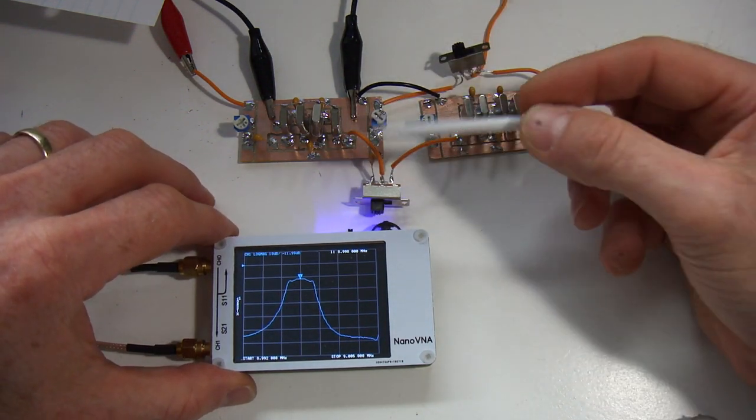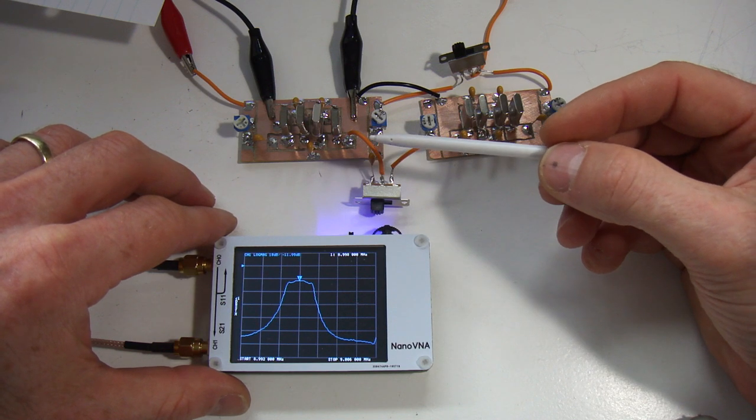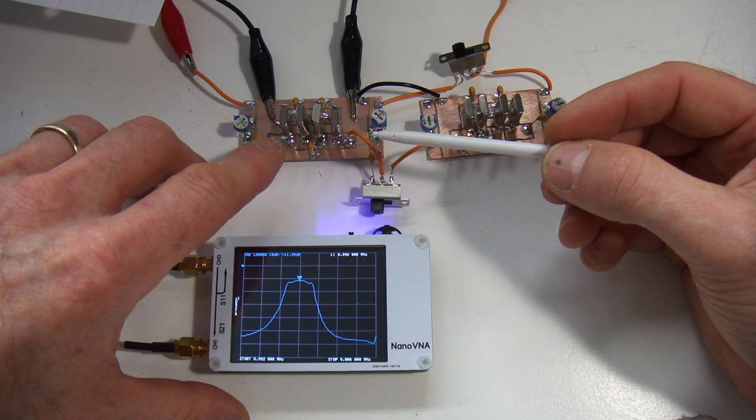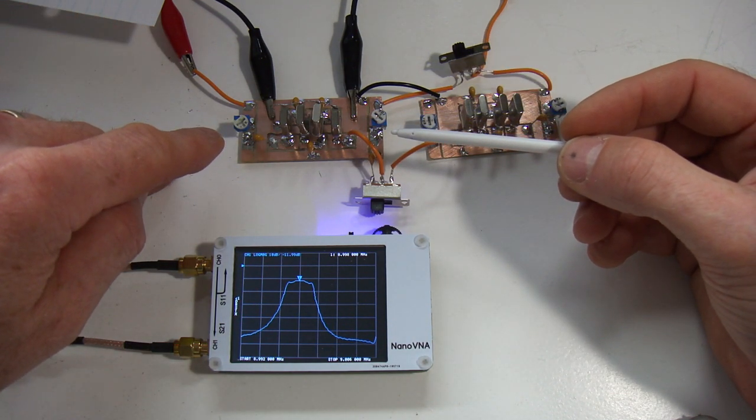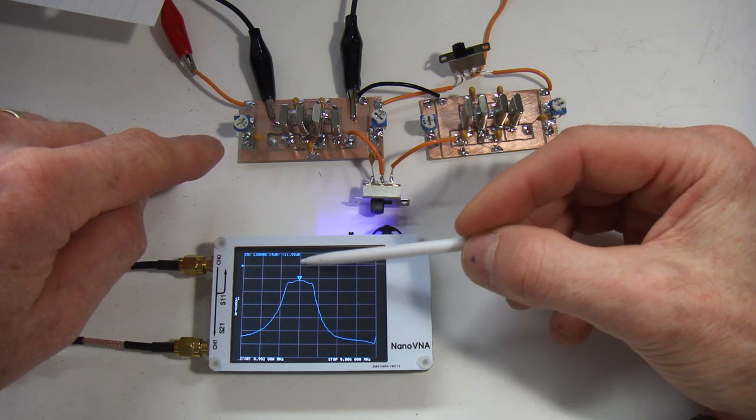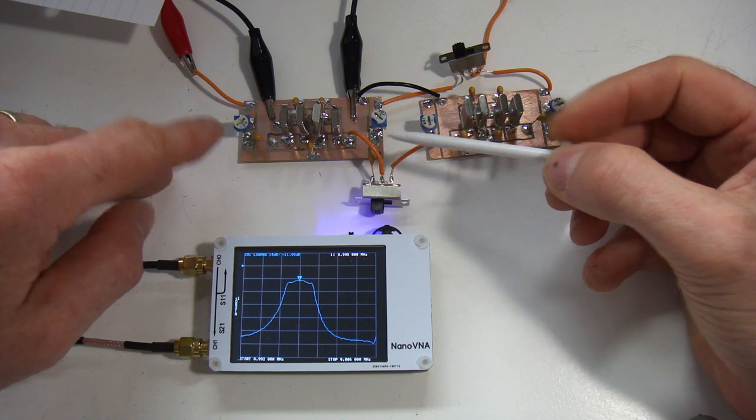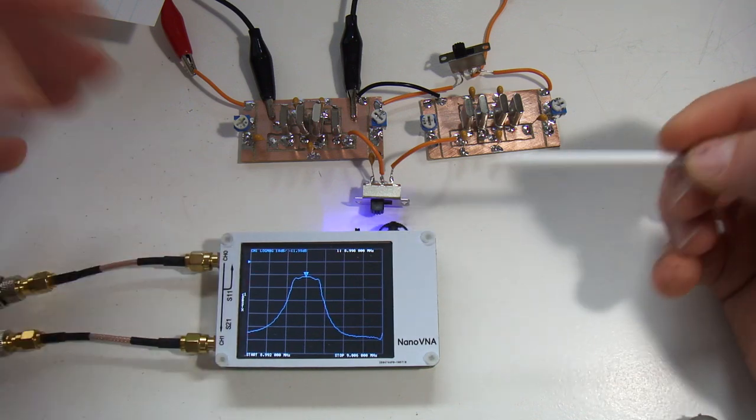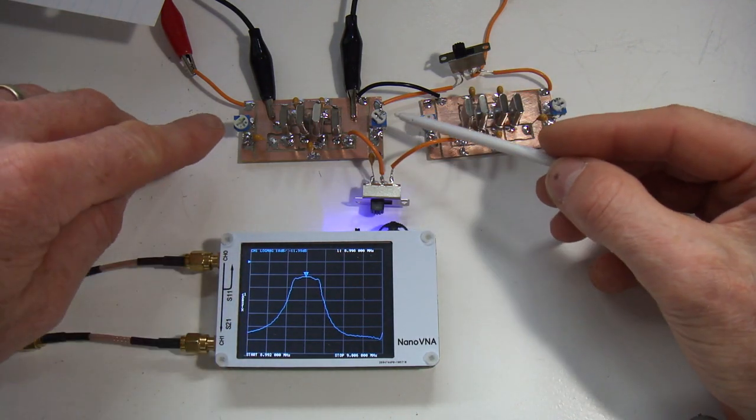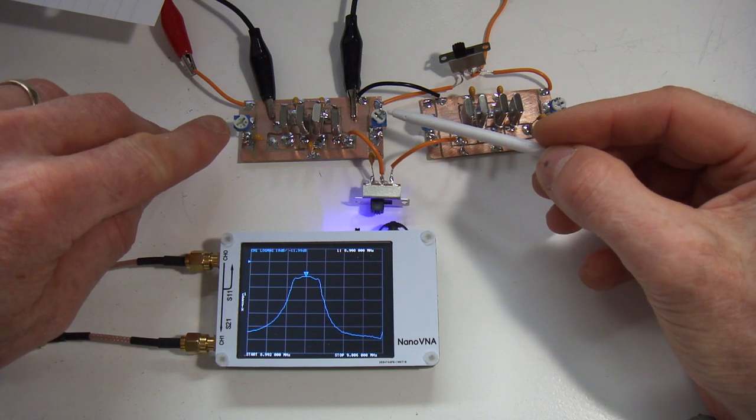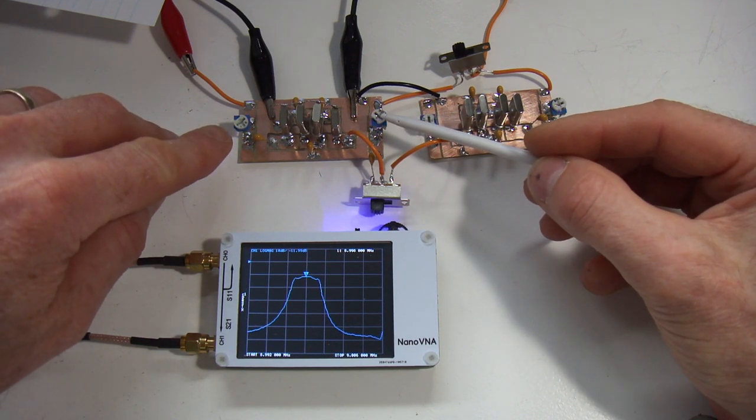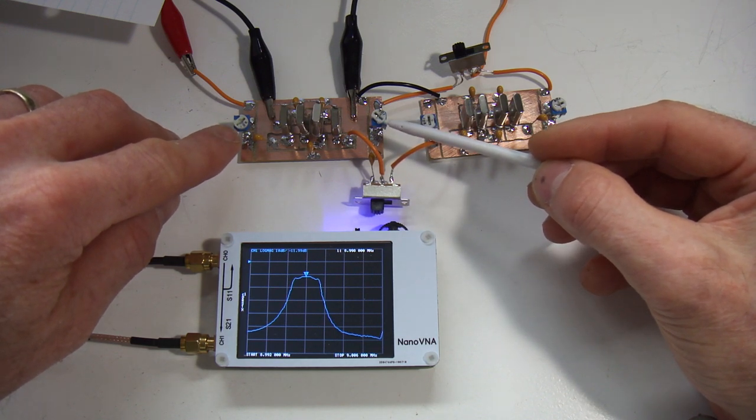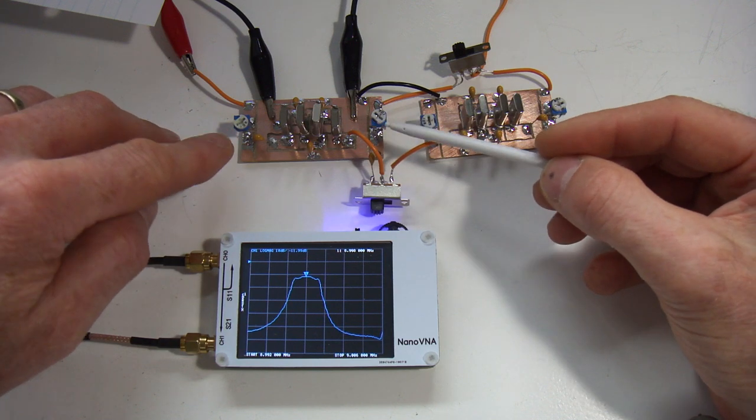It's very important for crystal filters to be terminated in the correct resistance. If you don't, you really affect the passband ripple. What I've done in the past, and it seems to work okay for me, is to use two little trim pots here, a couple of 200 ohm pots. I initially started with 500, then decided 200 was going to be a better idea. At this point they're sitting at 200 ohms.